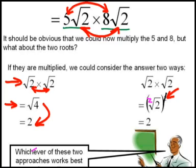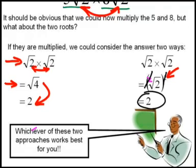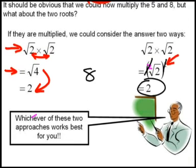That 2 outside the bracket and that 2 at the root sign cancels each other out and you get the same answer. You still get 2. So now we've got 40, the 5 and 8 gave us 40 times 2 which will then give us an answer at the end of 80.